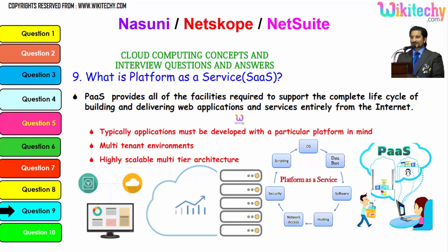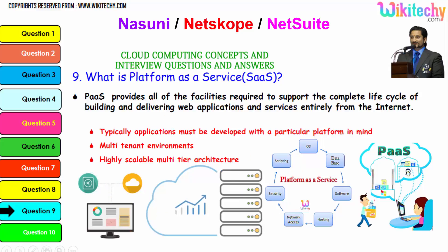Now, what is Platform as a Service — PaaS? PaaS provides all the facilities required to support the complete lifecycle of building and delivering web applications and services entirely from the internet. Applications must typically be developed with a particular platform in mind. It is a highly scalable, multi-tenant architecture. PaaS means you rent an operating system with the server, and you can put whatever software, database, and configuration you want — OS, database, software hosting, network access, security, and scripting are all included.